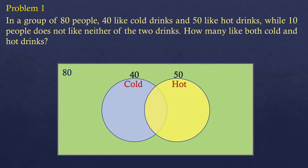You might wonder why we didn't put these numbers directly inside a circle. It's because some of the people like both cold and hot drinks. So it's actually not 40 people who like only cold drinks, because some of them also like hot drinks. Same with the 50 who like hot drinks — some of them like cold drinks as well, meaning some of them like both. And that's what we are looking for.